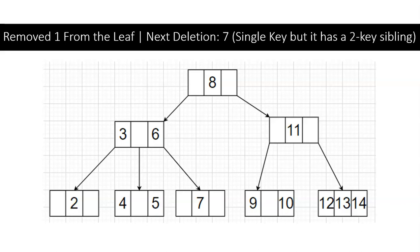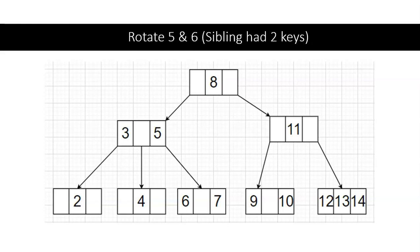Our next deletion is going to be 7, but it's also a leaf node with a single key, so we should be looking at its siblings. Since the sibling has two keys, we're going to have to do a rotate of 5 and 6. Then we can delete 7.